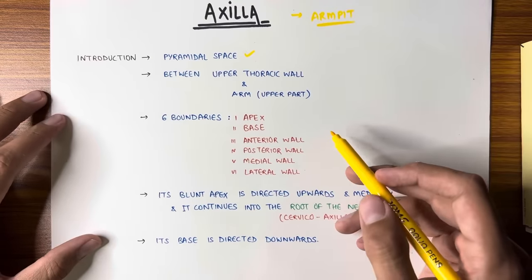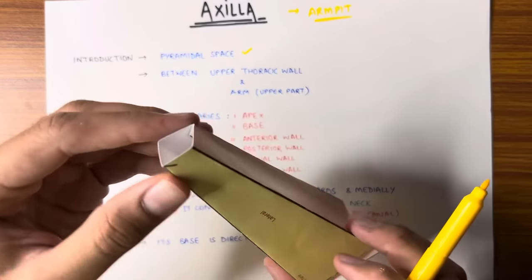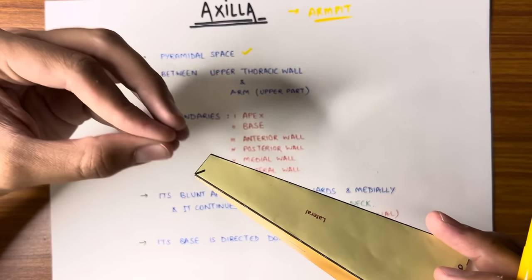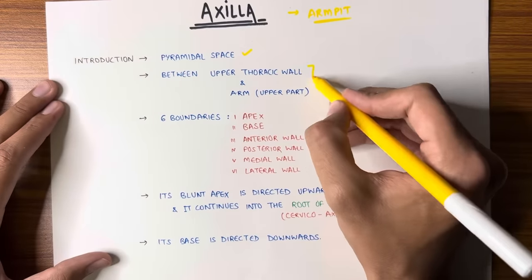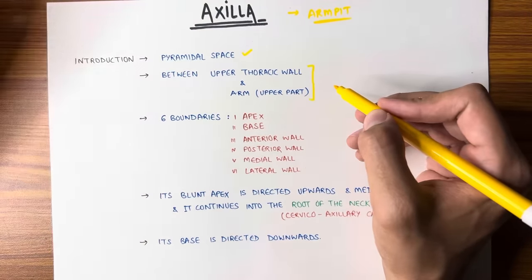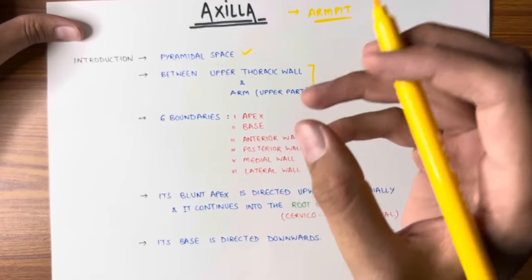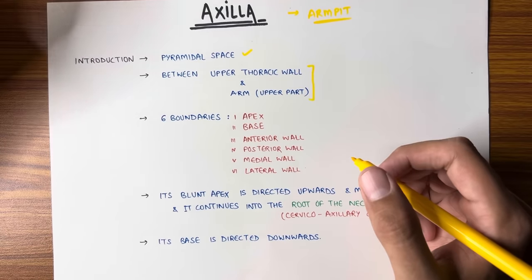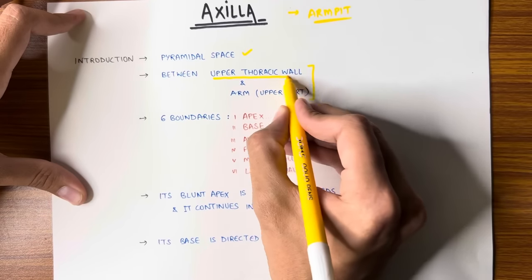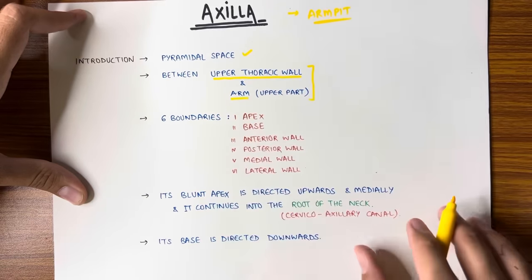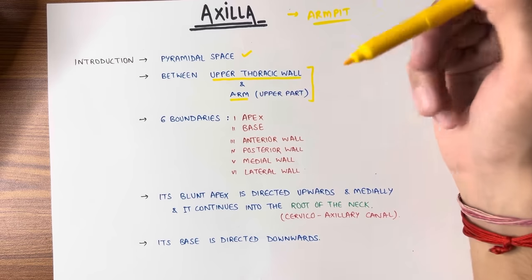What is the shape? It is pyramidal. This is the pyramidal shape — here is the apex, here is the base. The apex is not pointed but it is a pyramidal shape. So the axilla is a pyramidal shape. Our axilla — the armpit — is present between our arm and the upper part of the thorax, specifically between the upper thoracic wall and the upper part of the arm.